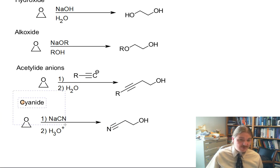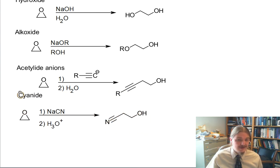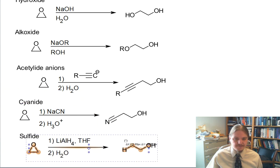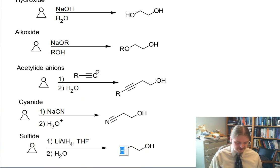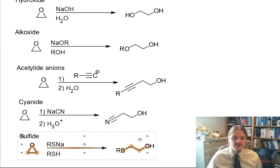The list can go on. For example, I'll do one more: sulfide anions. The sulfide anion reaction can be done in the presence of its conjugate acid because thiols are reasonably acidic and can be deprotonated by the oxygen.